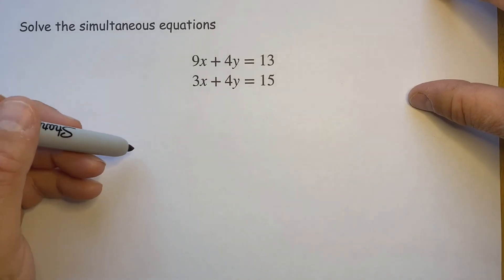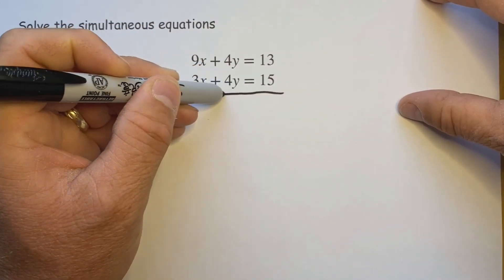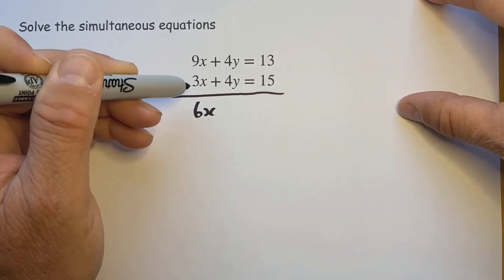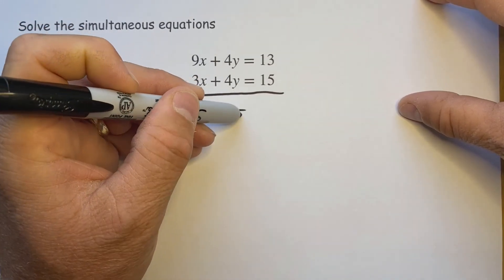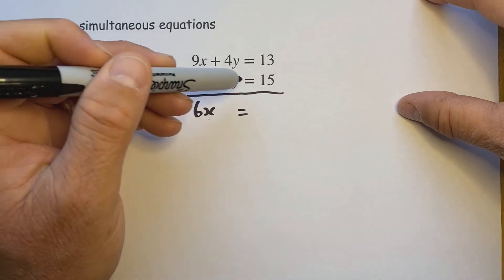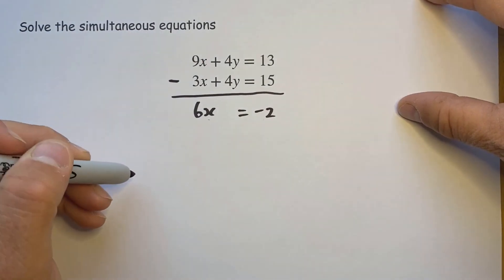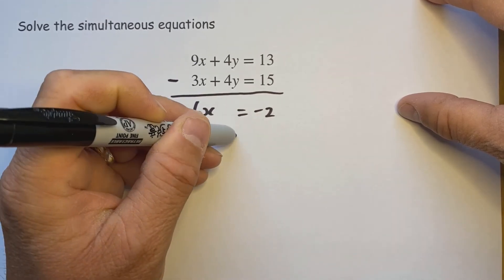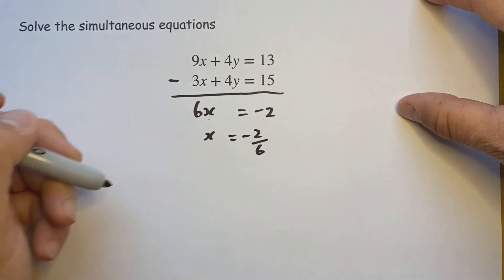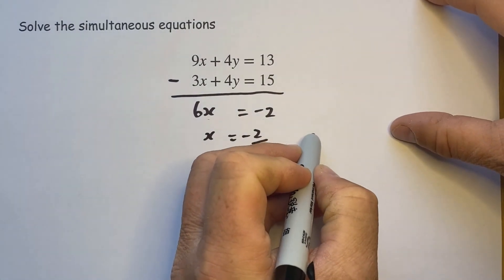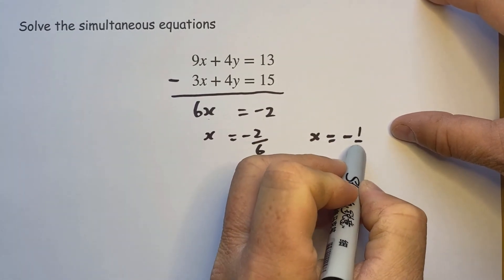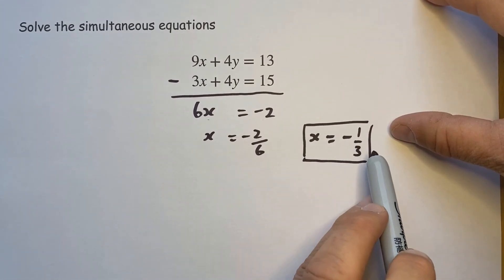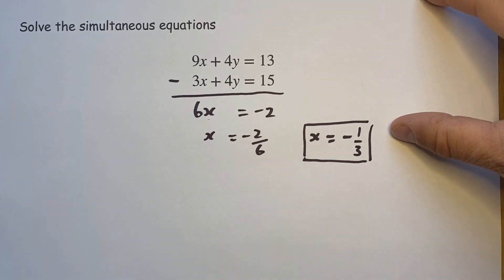Okay, so here in order to eliminate the letter y we would subtract. 9x take 3x is 6x, 4y take 4y disappears, and 13 take 15 is minus 2. Now 2 is not in your 6x table so it's division just like in the previous one. So we have that, however that can tidy up because 2 over 6 is the same as one third. So it's more challenging on two fronts: it's a negative answer and the answer is also fractional.